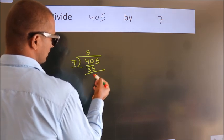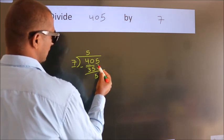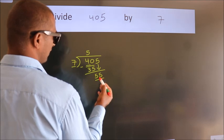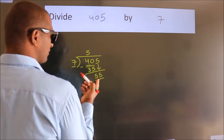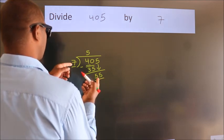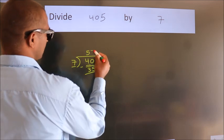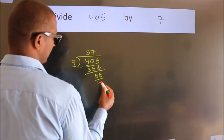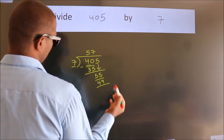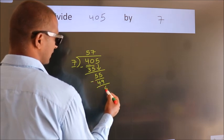After this, bring down the beside number. So 5 down. So 55. A number close to 55 in the 7 table is 7 sevens, 49. Now we subtract, we get 6.